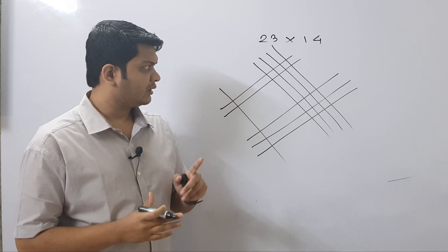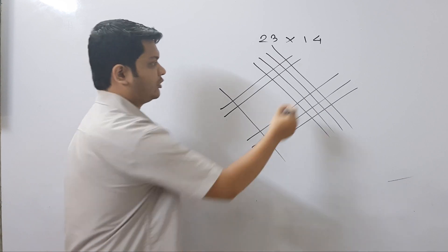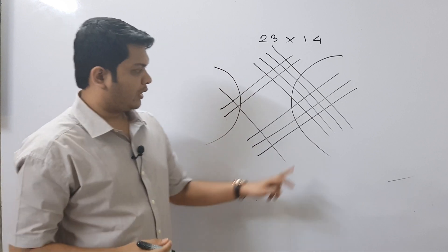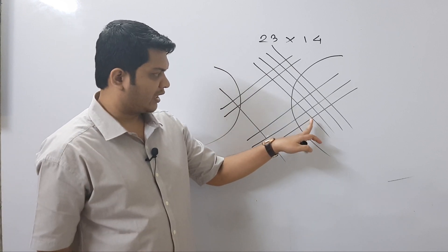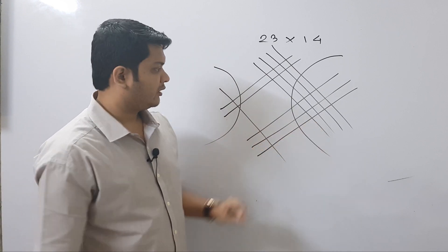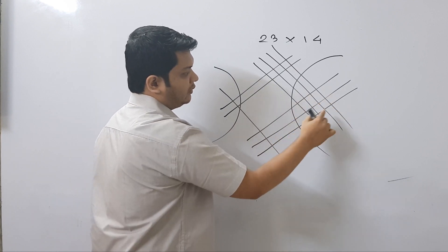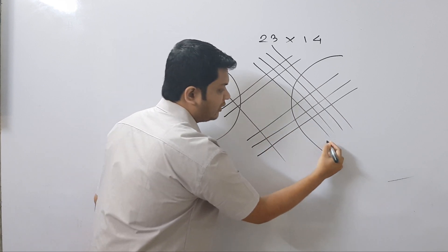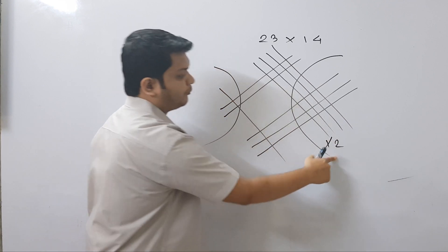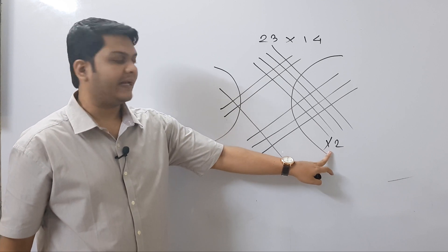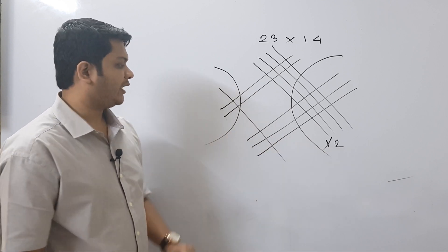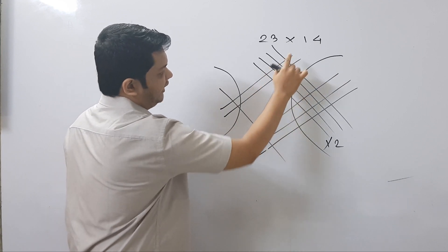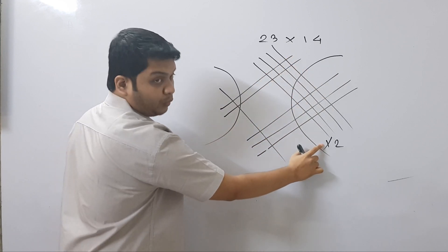Now here comes the part of carry — I will explain what that means. At first, count the number of intersecting points in the rightmost group: 1, 2, 3, 4, 5, 6, 7, 8, 9, 10, 11, 12. So we have 12, but we will write only 2 here and this 1 will carry out to the next place. In the middle group we have 1, 2, 3, 4, 5, 6, 7, 8, that is 3 plus 8 equals 11, plus 1 carry.